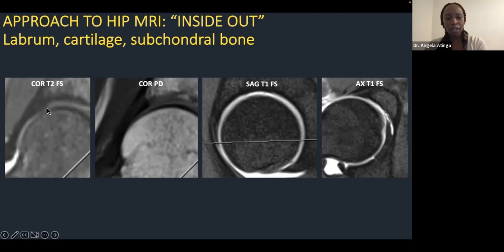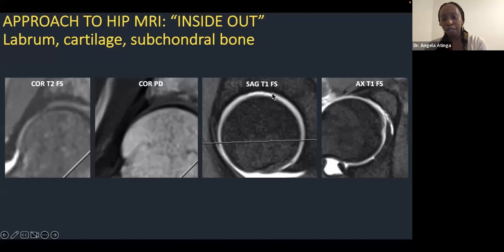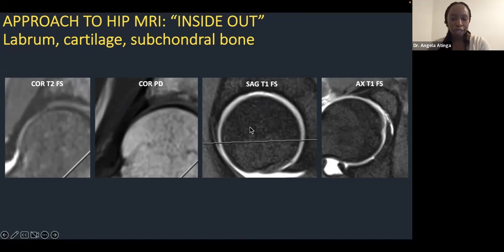The labrum is immediately adjacent to cartilage — that line of intermediate signal intensity comprises both the acetabular and femoral head cartilage. On 3T PD sequences you get very good resolution of the labrum. On arthrograms you can appreciate the dual layer of acetabular and femoral cartilage forming an interface. Increased focal T1 signal intensity on the arthrogram indicates a cartilage defect or area of cartilage thinning. There are also a number of normal variants at the chondrolabral junction and acetabular cartilage that you should be aware of.